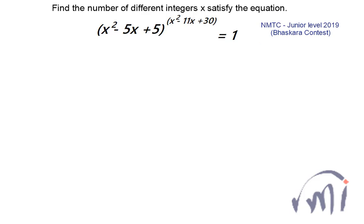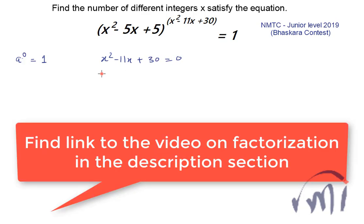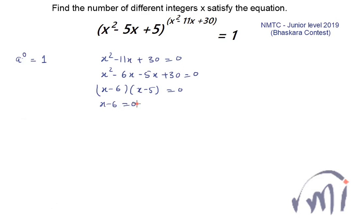We know that any integer raised to the power 0 is equal to 1. So if this condition holds, the exponent expression x² - 11x + 30 must equal 0. This can be factorized as x² - 6x - 5x + 30 = 0, giving (x - 6)(x - 5) = 0. So x = 6 or x = 5 — two values satisfying this condition.